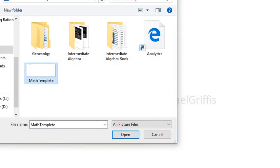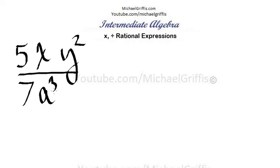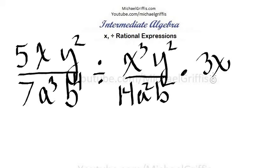Let me clear the template and start over. Five xy squared over seven a cubed b to the fourth, divided by x cubed y squared over 14 a squared b, times three x squared y over z.